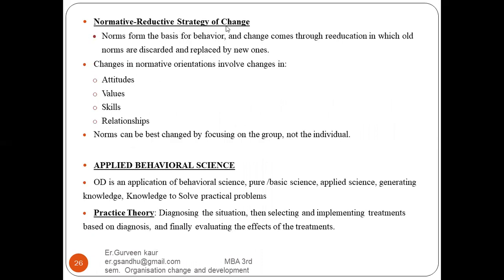Next is normative reductive strategy for change. In this, old norms are discarded and replaced by new norms. The change in normative orientation involves change in attitude, values, skills, and relationships. Overall, changes happen across four aspects: the attitude of people, the values of the organization, the skills of people, and the relationships among people. Norms can best be changed by focusing on the group, not the individual — we will be talking of the group and the team, not a single individual.